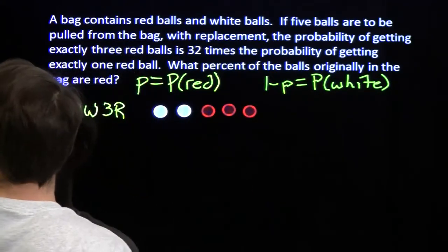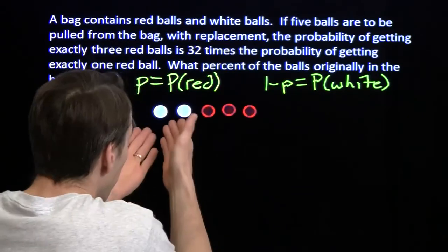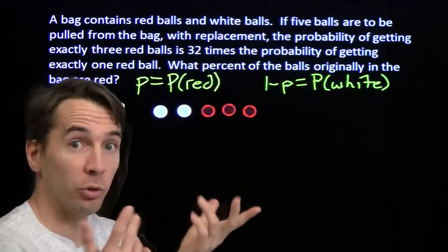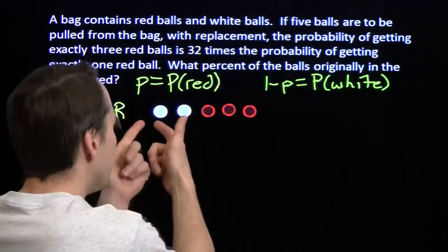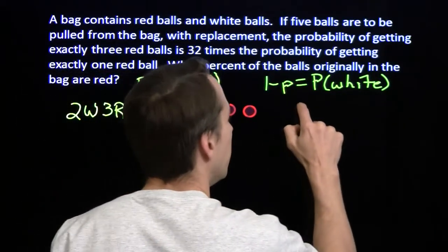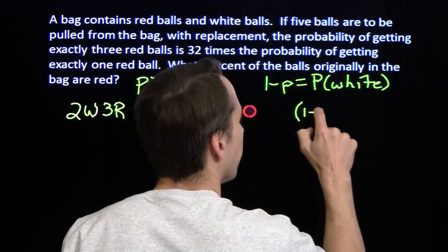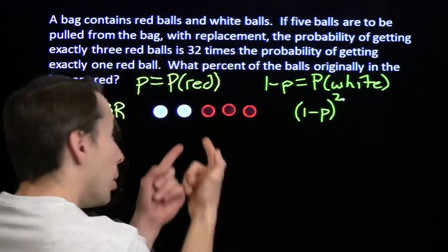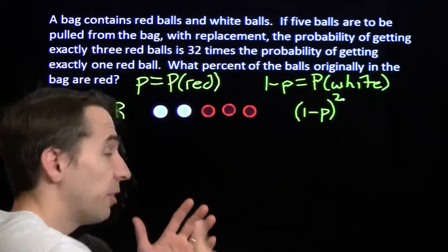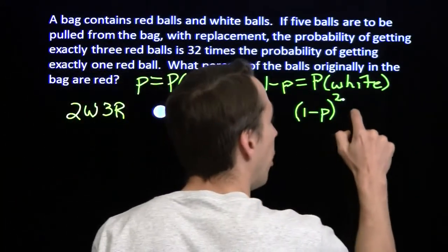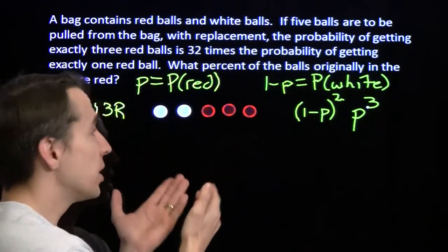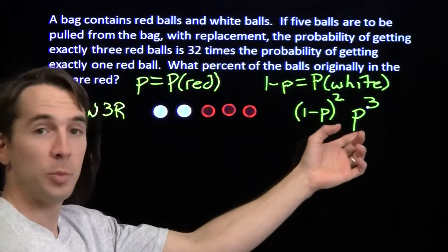What's the probability of getting exactly this sequence? The probability of getting the first ball white is one minus P, and the same for the second — we're doing this with replacement. So we get a factor of (1-P)² for the two whites. Then the probability of getting each of the three red balls is P, giving us a factor of P³. So the probability of getting exactly this sequence is (1-P)² times P³.